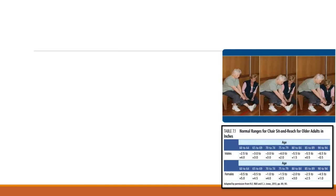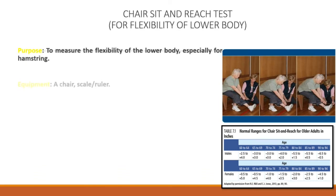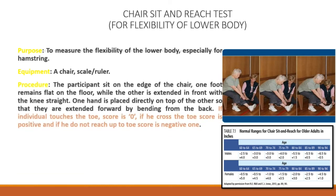Chair Sit & Reach Test for Flexibility of Lower Body. The participant extends forward by bending from the back. If the individual touches the toe, the score is 0. If they cross the toe, the score is positive. If they do not reach up to the toe, the score is negative.